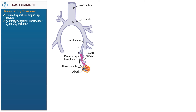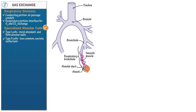Now let's focus on an alveolar sac, the functional unit of the lung. Note that each alveolus comprises the following specialized cells: Type I cells, which are the most abundant and form alveolar walls; Type II cells, which despite constituting only 5% of the alveolar surface are still essential because they secrete surfactant; and alveolar macrophages, which clear debris.